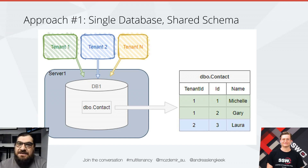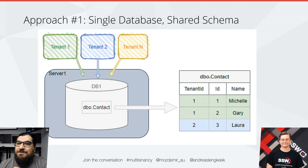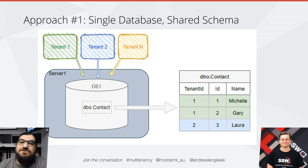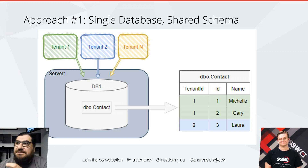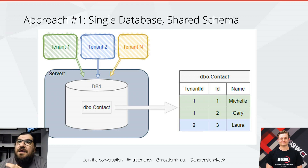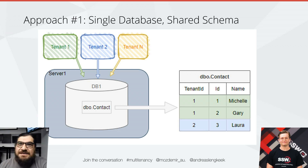A WHERE tenant ID equals X must land through for every single query. You've got to make sure that middle tier of yours is bang on, sending that tenant ID every single time, because you never want the ability for one tenant to see another tenant's data. Some of the cons: backing up data for tenants is going to be a little bit more tricky — exporting, importing — you've got to be aware of the tenant ID. Scale up or scale out is going to happen for everyone, not just a particular tenant. You can't necessarily have different pricing models. That's approach one.